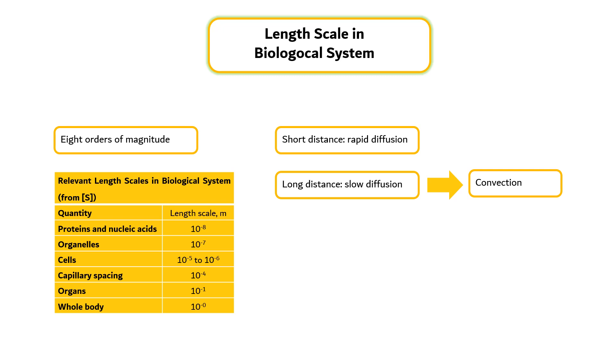Because of the different length scales in biological systems, the relative importance of diffusion or convection varies with the specific situation.